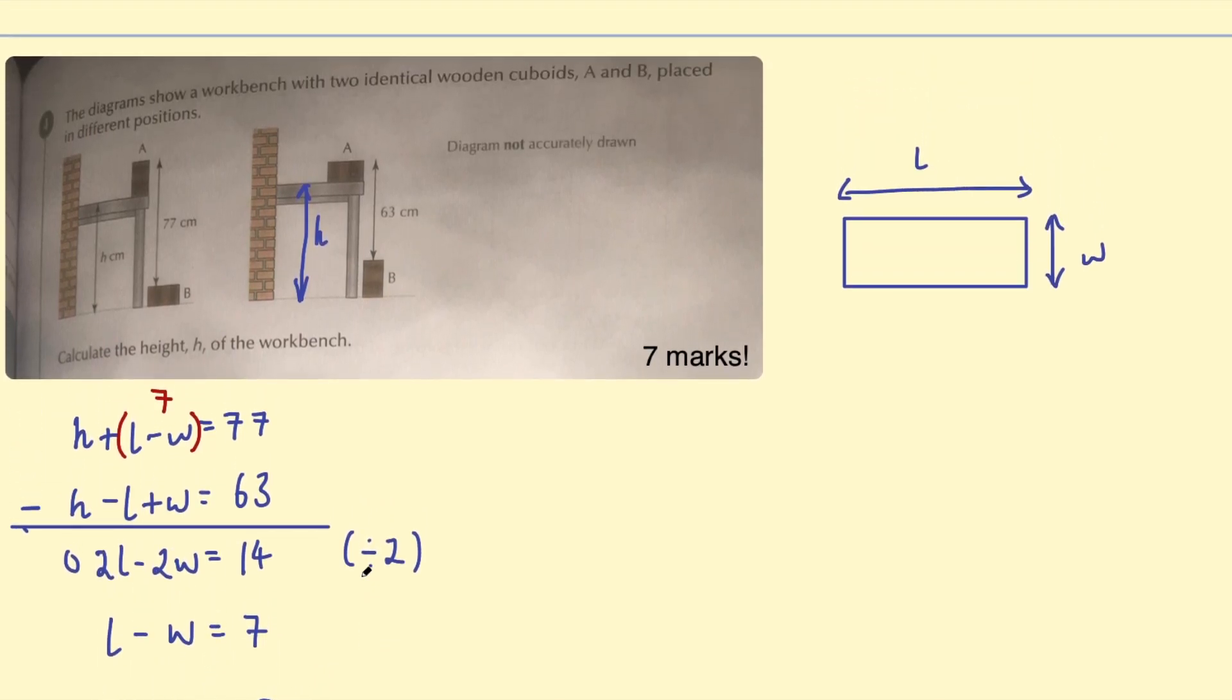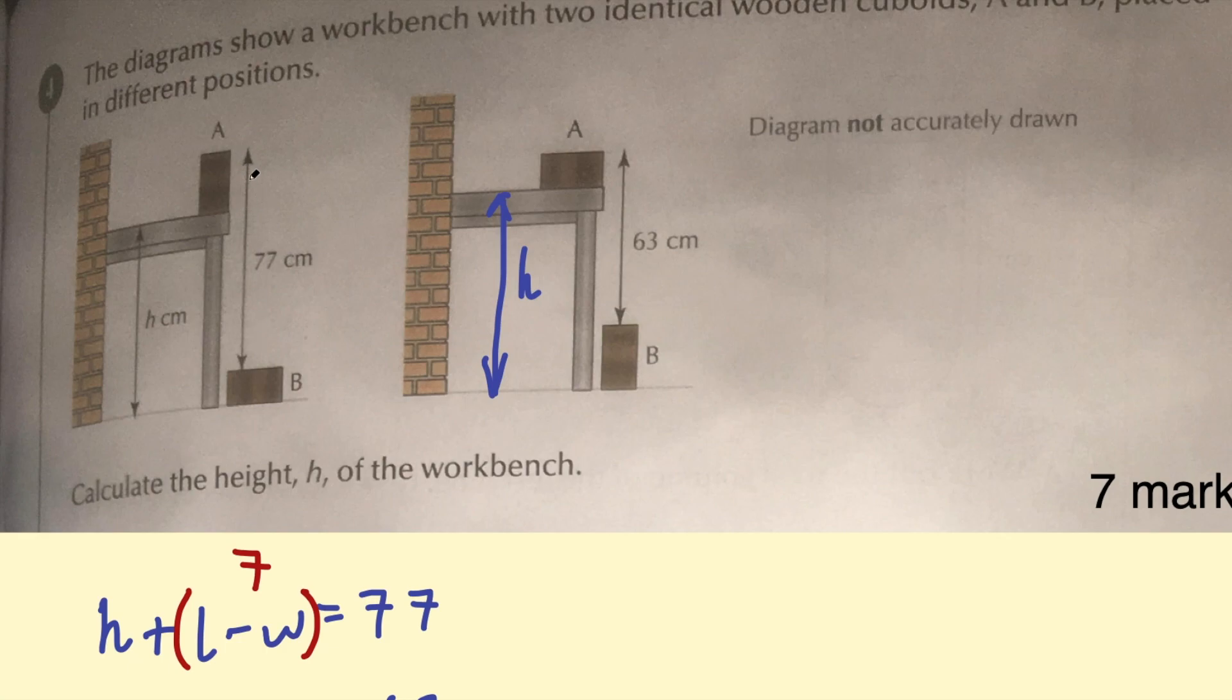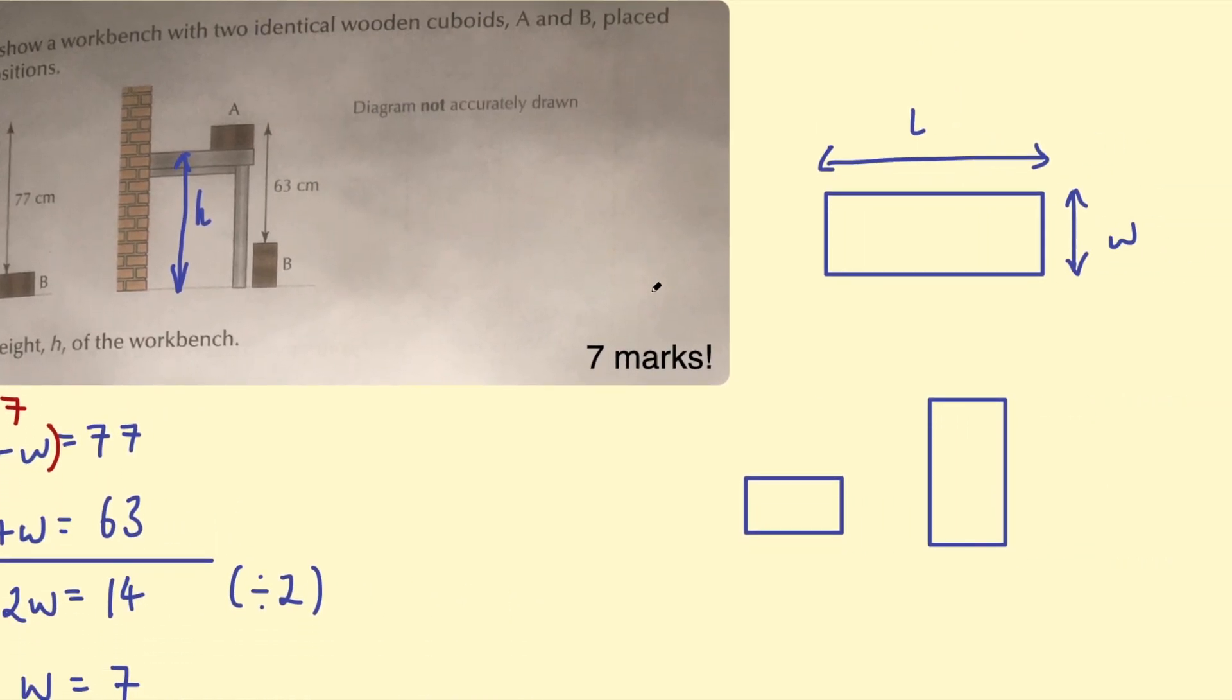Going back to the diagrams again, you can also, instead of giving these length and width each separate unknowns, you can introduce just one unknown. So let me draw two blocks again. Okay. So looking at these diagrams a bit closer, you might notice that in the first one, we are adding the difference between the length and the width. And then in the second one, we are subtracting that difference. So looking at these two blocks again, we're adding this difference here. This is the difference between the height and the width. So we could call this X, for example.